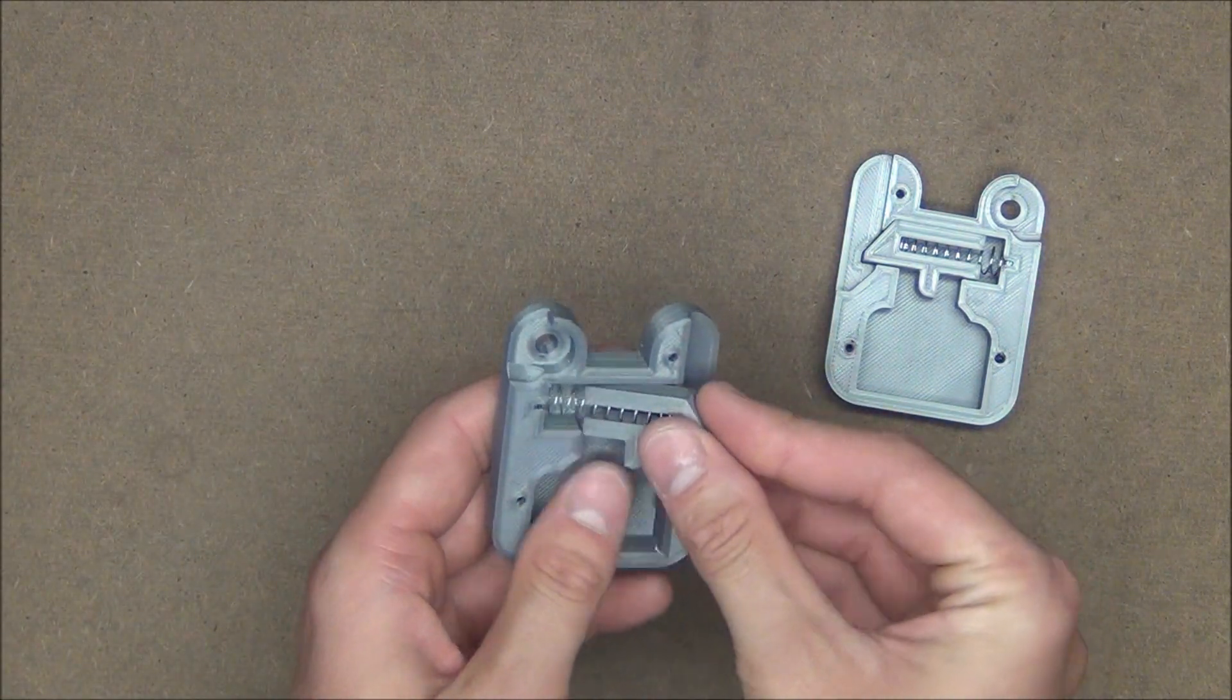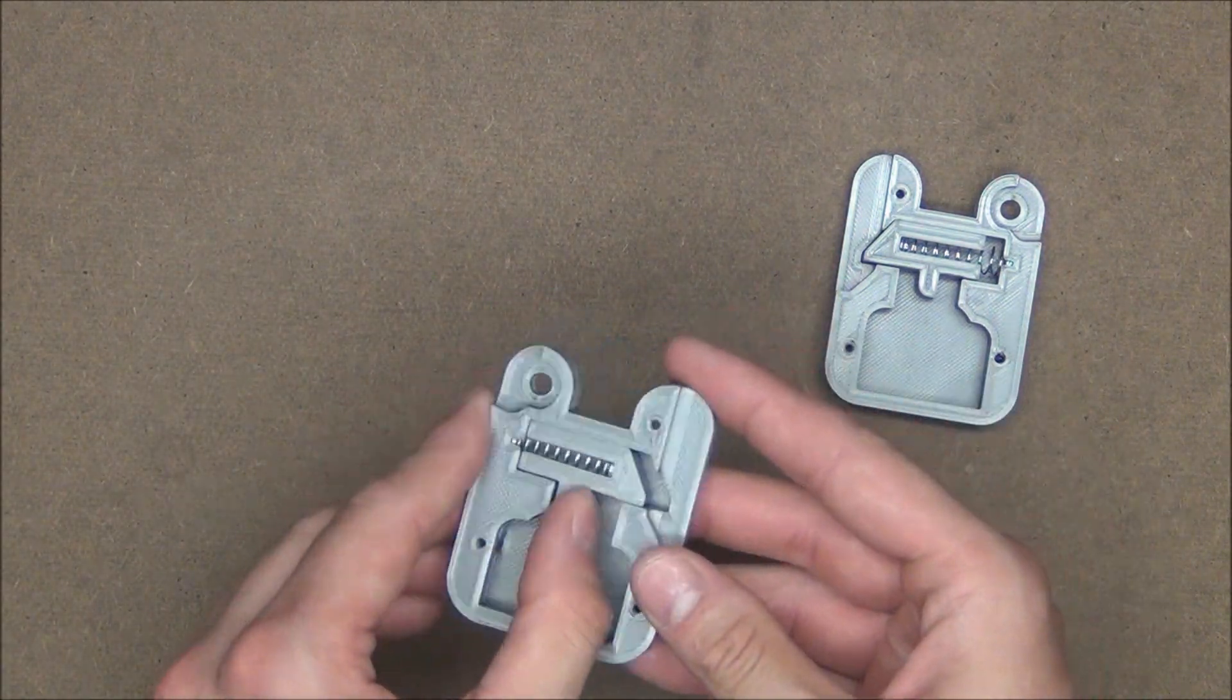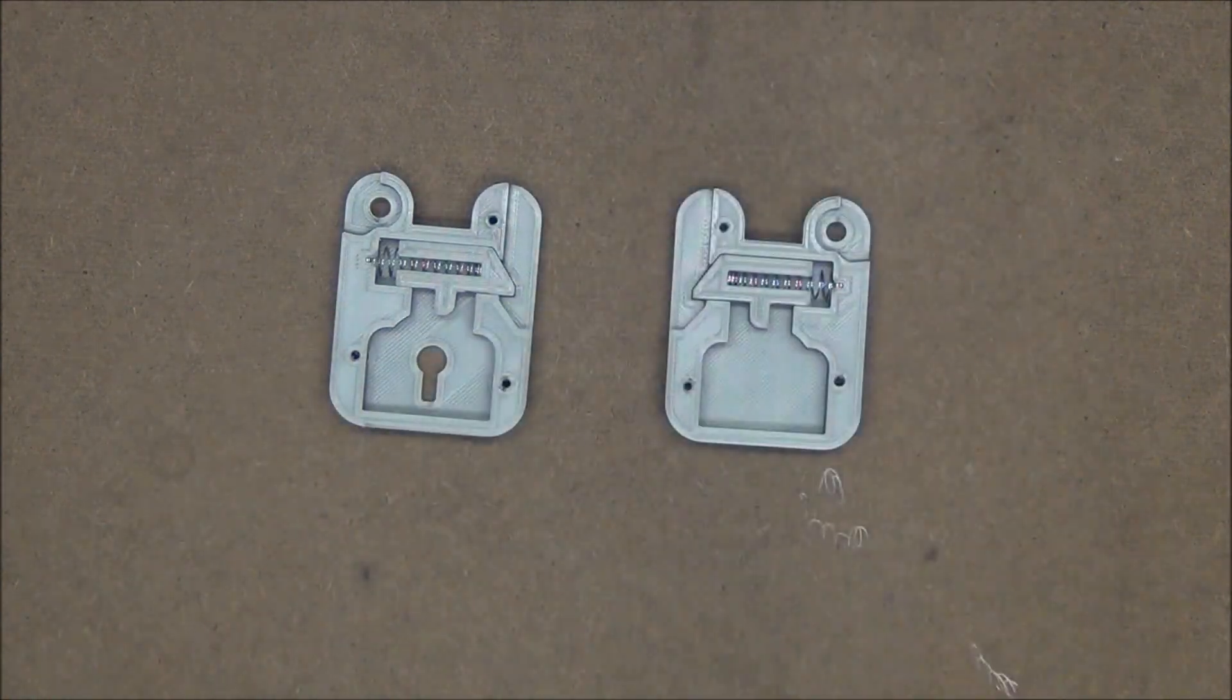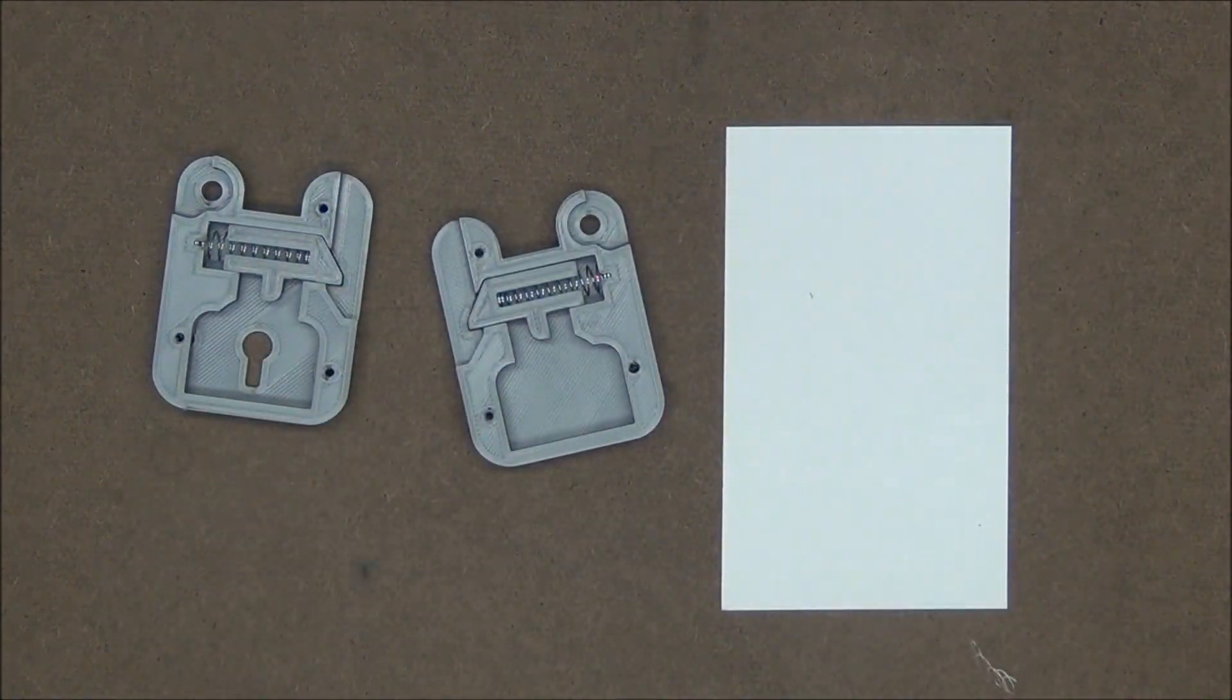Now these bolts are two of the moving pieces we sanded down. But to go even a step further, I'm going to give them a healthy coat of white lithium grease because we really want as little friction in here as possible.